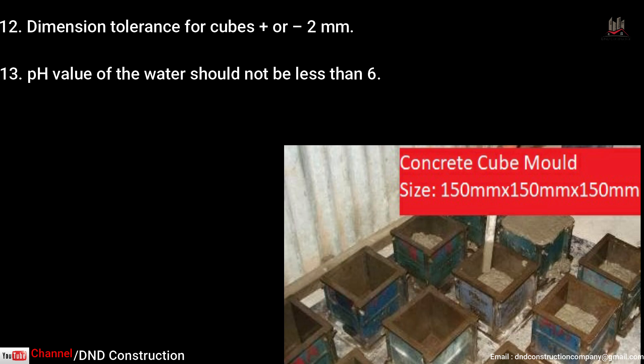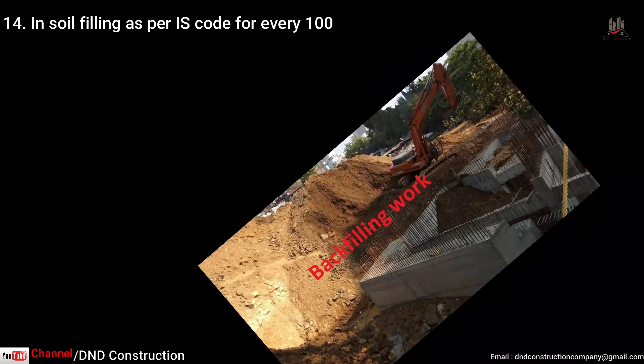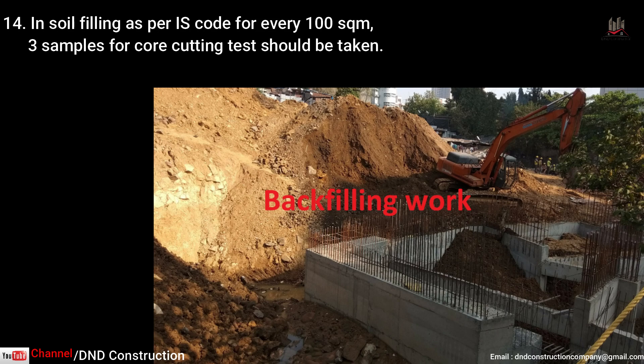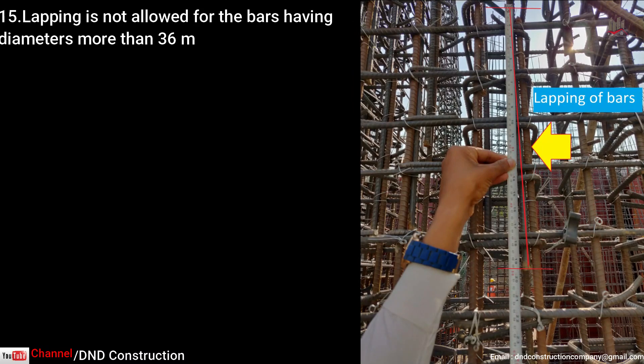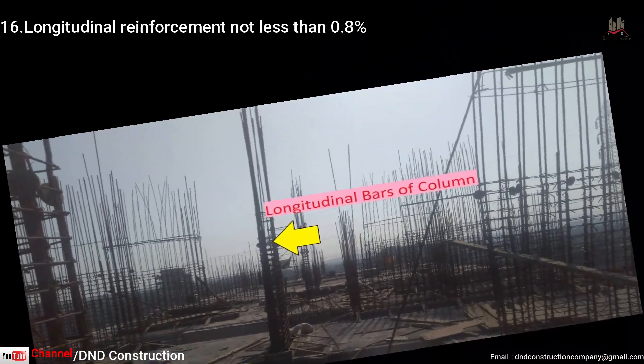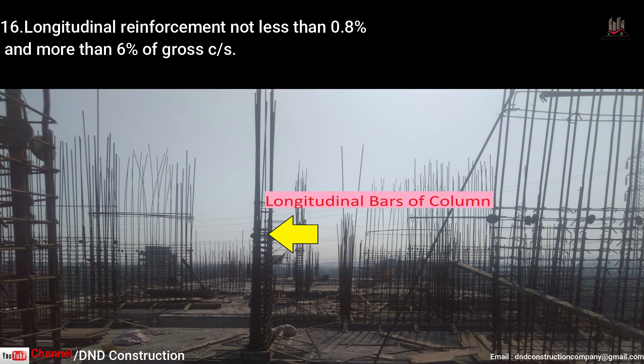Point thirteen: pH value of water used for mixing and curing shall be less than 6. Point fourteen: for soil filling work, as per IS code, for every 100 square meters, three samples are taken for a core cutting test. Point fifteen: lapping is not allowed for bars having diameter more than 36 mm, as lapping transfers load from one bar to another and requires a development length. Point sixteen: longitudinal reinforcement of a column should not be less than 0.8% and not more than 6% of cross-sectional area; generally on site, 4% is used for design purposes.